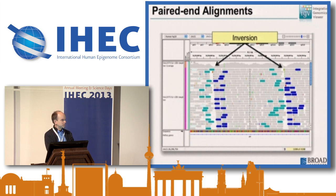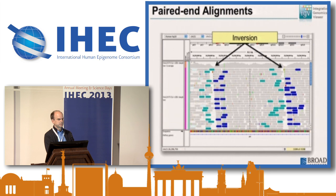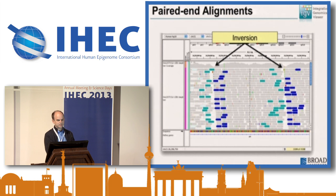SNPs and mutations are what most people use IGV for. It also understands paired-end alignments, expected orientations, expected insert sizes, and uses various colors to flag different events — this example is flagging an inversion. That would take a very long time to explain fully, so I'll ask you to take my word for it. This is from a Thousand Genomes sample.